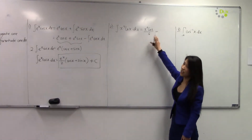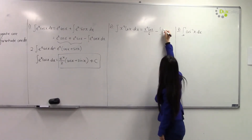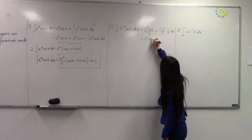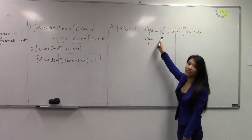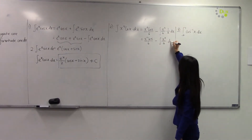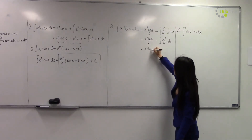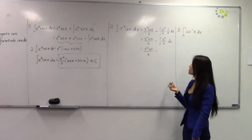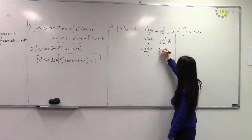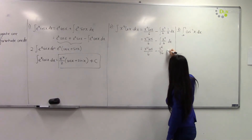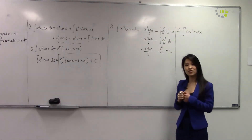Then we subtract, integrate one, differentiate one. Simplifying this, we get the integral of x^5 over 6 dx. To integrate this, it's very simple — we just get x^6 divided by 36. Again, plus C, so that's your final answer.